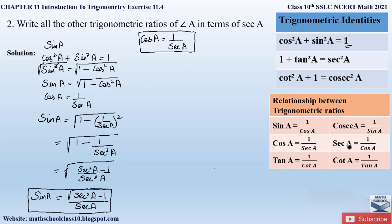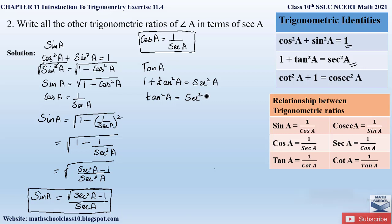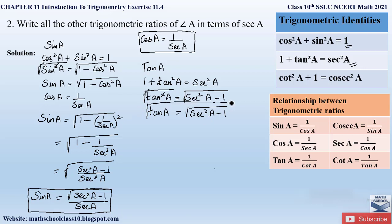Now for tan A in terms of secant, we use the second trigonometric identity: 1 + tan²A = sec²A. Sending 1 to the right-hand side gives tan²A = sec²A − 1. Taking the square root on both sides, the square and square root cancel, so tan A = √(sec²A − 1). This is the value of tan A expressed in terms of secant.